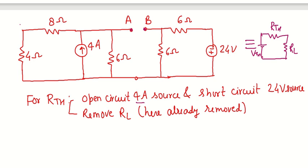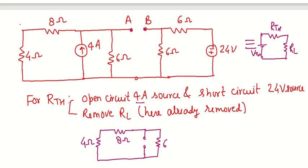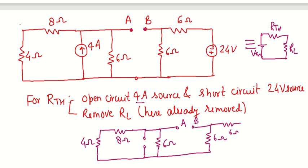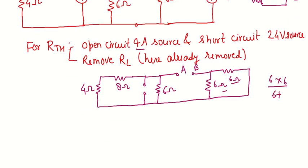For finding RTH, we open-circuit the 4 ampere current source and short-circuit the 24 volt voltage source. The circuit then has a 4 ohm resistance in series with an 8 ohm resistance, with the current source open-circuited. There is also a 6 ohm resistance, with node A and node B identified. There are two 6 ohm resistances, and the voltage source is shorted, giving 6 ohm in parallel. Then 8 and 4 ohm are in series giving 12 ohm.